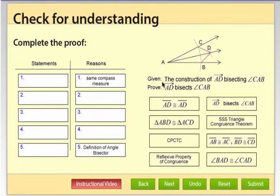Complete the proof. Given the construction of ray AD bisecting angle CAB, so that's this ray AD that bisects angle CAB, and prove that ray AD actually does bisect angle CAB. So basically, given this picture of a construction, we're going to prove that it actually is a bisector.